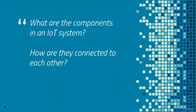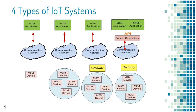This video discusses two main points: what are the main components of an IoT system, and how are these components connected to each other? On the left side of the screen you see simple systems where one or a collection of M2M devices exchange data with M2M applications over the communication network.